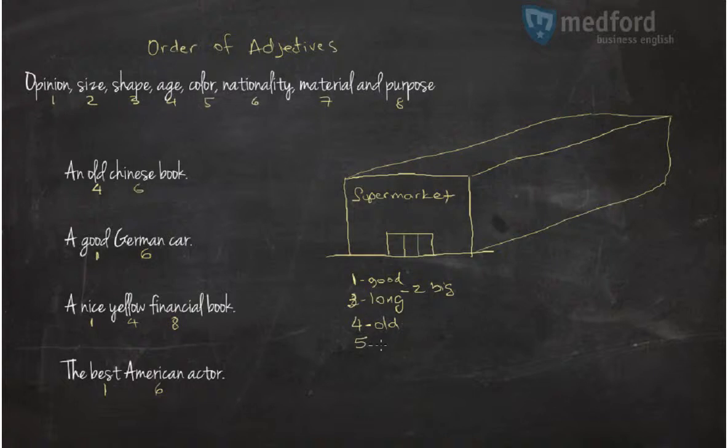Five, imagine the color. Well, Carrefour usually is blue, that's the dominant color. Nationality. Six, Carrefour is a French supermarket. Material. Well, it's made of bricks and purpose. To shop.